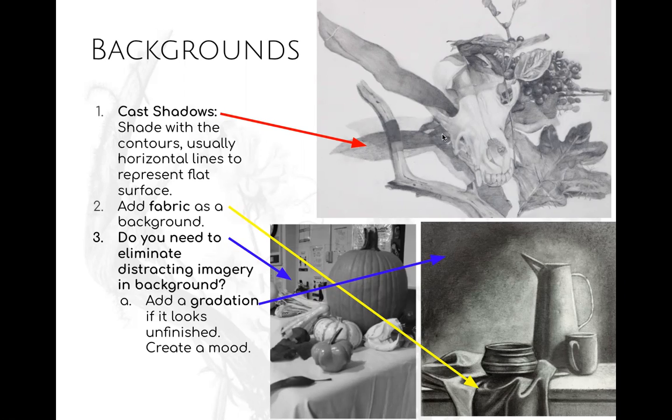Most of the time when I'm shading cast shadows, I use horizontal lines in order to make those surfaces seem flat, but then sometimes they have to have contour to make the other surface seem 3D. So really focus on the direction of those cast shadows.